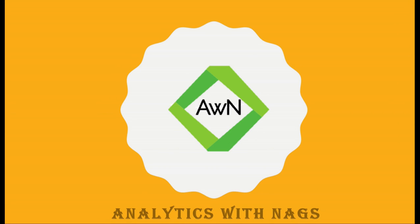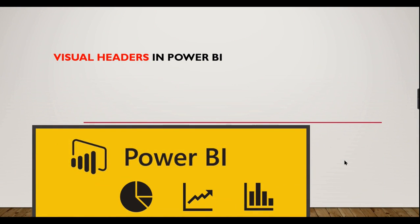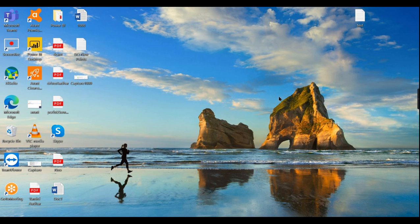Welcome to Analytics with Nags. In this video we are going to see what visual headers are in Power BI. A visual header is basically a list of options that appear at the top of your visuals. We will see the different options available, how you can control them, whether the user wants to see the visual headers or wishes to hide them from the viewing perspective. If you are new to this channel, hit the subscribe button right now to learn concepts in Power BI.